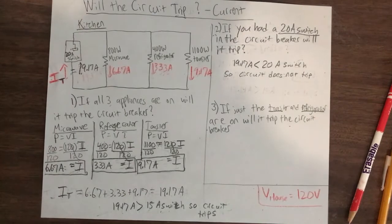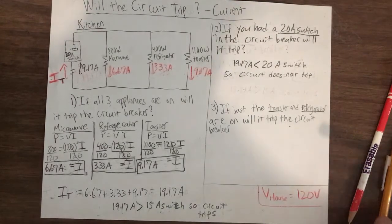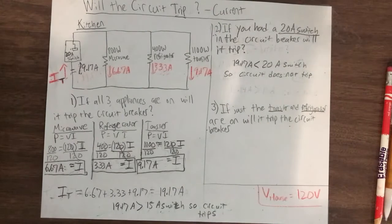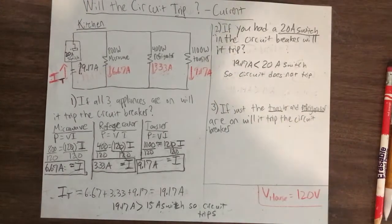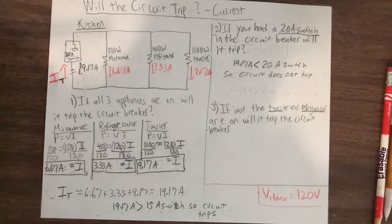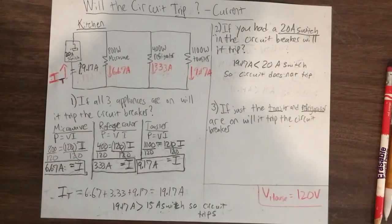I wouldn't suggest just going to Home Depot and switching to a 20 amp switch, though. If you allow more current to flow, it could cause a fire and your wires might not be able to handle it. If you have the skills to do that, ask a professional first to see if your wires can handle more current. Remember, 15 amps is a safety level — going over that could cause a fire. Some wires can handle more amps and you could put a 20 amp switch in, but an electrician would be the one to determine if you can safely do that. With a 20 amp switch, all three devices would stay on because they're not over 20 amps.